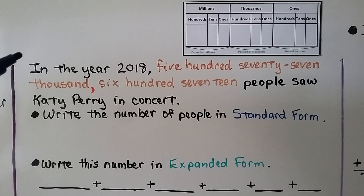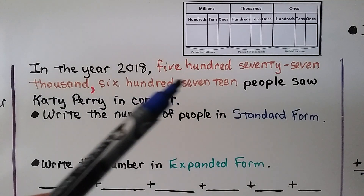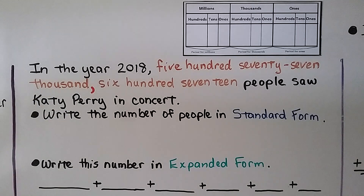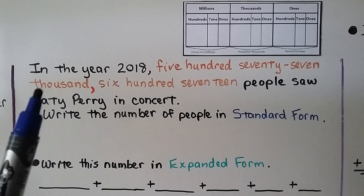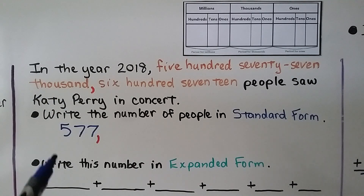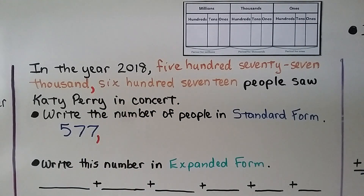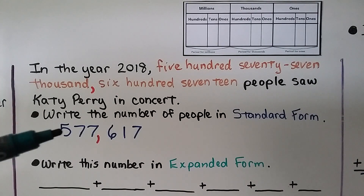In the year 2018, 577,617 people saw Katy Perry in concert. Write the number of people in standard form. Here we have it written in word form, and we need to put it into standard form with numbers and commas. We see five hundred seventy-seven thousand, comma, then 617. So we write 577,617. Now we've turned this word form into standard form.